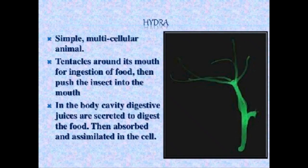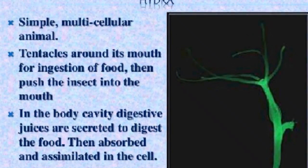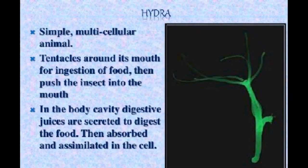Second is hydra. Hydra is a multicellular animal. It has tentacles — the long lines you see in the diagram are tentacles, and the portion below them is the mouth. Tentacles around its mouth help in capturing food. It takes in food using tentacles and then pushes the insect into the mouth. In the body cavity, digestive juices are present which digest the food. After that, absorption and assimilation occur.